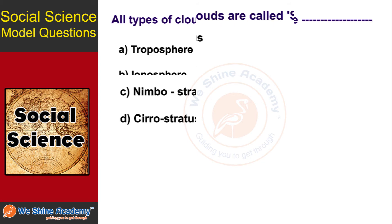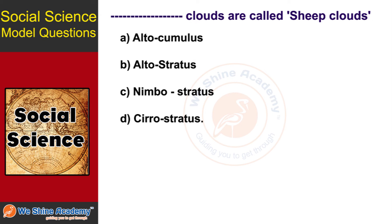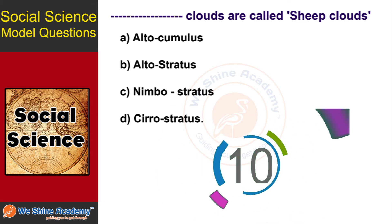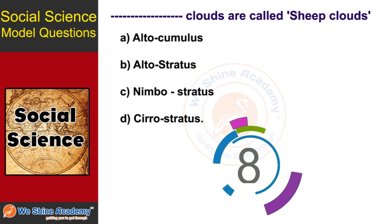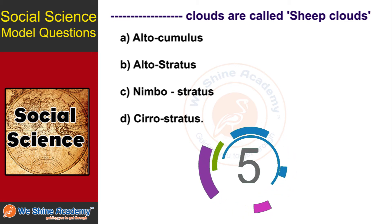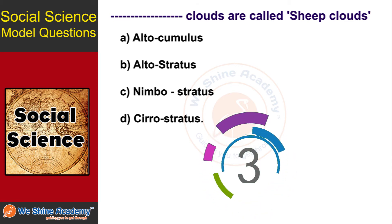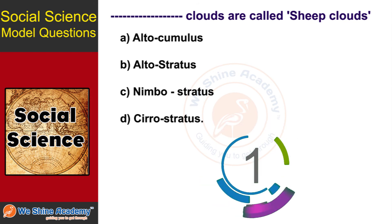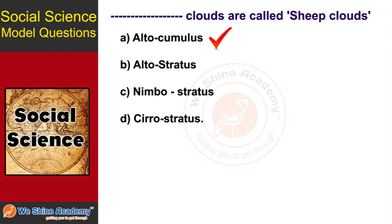The next question is: dash cloud is called Sheet clouds. In 10 seconds, find the answer. The answer is Option A: Alto cumulus. Alto cumulus clouds are called Sheet clouds.